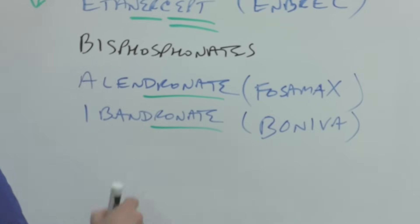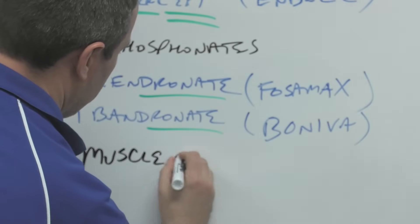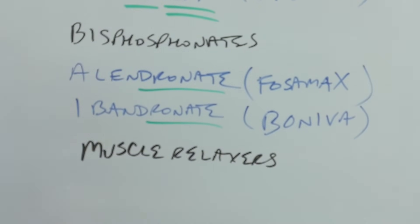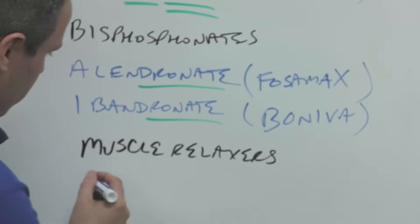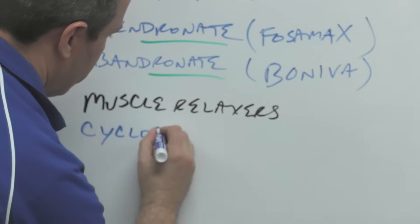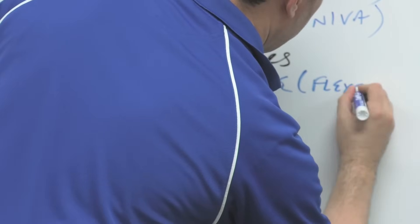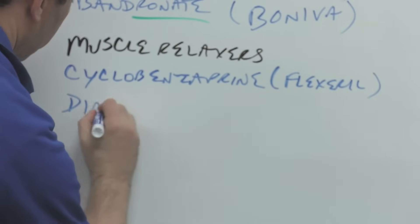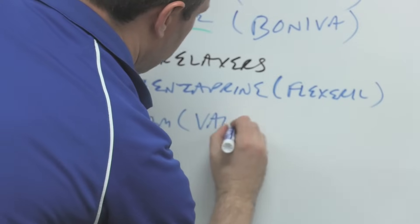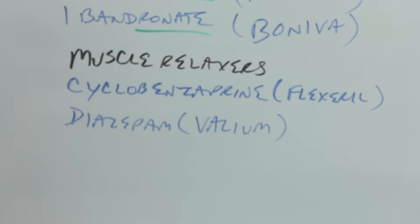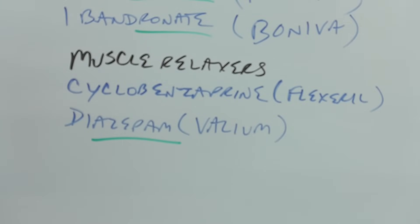Then we have muscle relaxers, and the muscle relaxers include cyclobenzaprine, which is Flexeril, and diazepam, which is Valium, and the azepam is a stem. So cyclobenzaprine, you can see the word B-E-N-Z, and it's like you're bending, and then flex for Flexeril. Diazepam is a benzodiazepine; we'll see benzodiazepines in the neuro section, but these are also used for muscle relaxation, so I put one here.